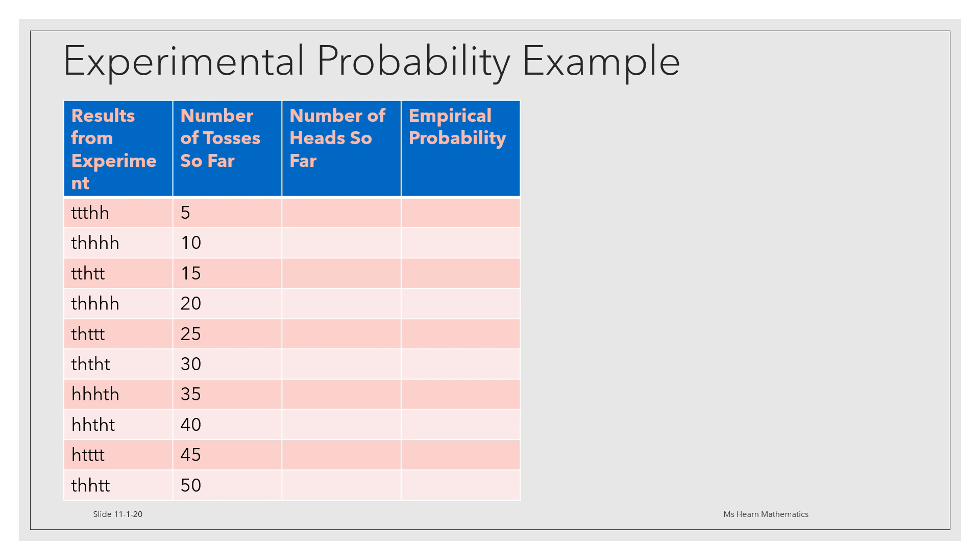So the number of heads so far is 2. So the empirical probability of that happening is two fifths, which I'm going to write in decimal form for the purpose of being able to compare to the other probabilities as we go. That would be 0.40.